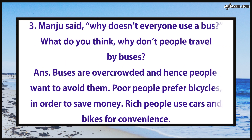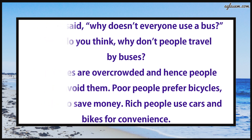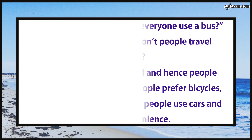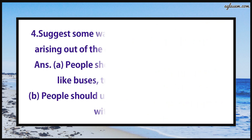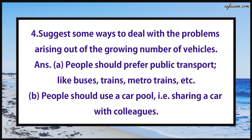Question number three says: Manju said, 'Why doesn't everyone use a bus?' What do you think — why don't people travel by buses? Answer: Buses are overcrowded and hence people want to avoid them. Poor people prefer bicycles in order to save money, while rich people use cars and bikes for convenience.